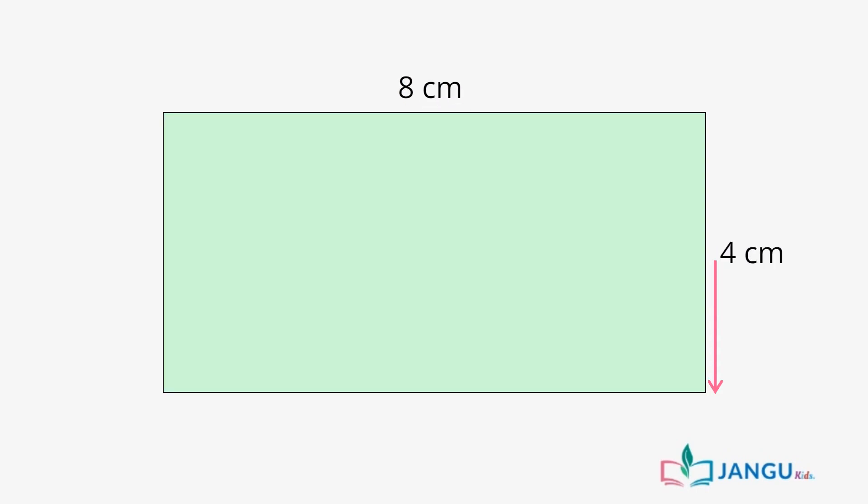For example, the rectangle on your screen is 2cm wide and 4cm long. Assuming we are to enlarge the figure by a scale factor of 2, we will have to multiply each side of the figure by 2. This is because the figure is to be enlarged two times of its original size. Therefore, the enlarged figure will be 4cm wide and 8cm long.